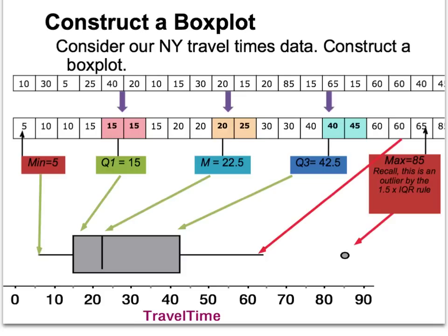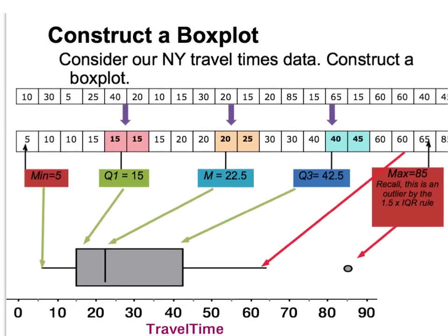Using the New York commuting time data again: the median was 22.5, Q1 was 15, and Q3 was 42.5. We use those three numbers to make our box. Q1 is at 15, Q3 is at 42.5, and the median line is at 22.5. The number line goes from 0 to 90, covering the smallest value of 5 up to at least 85.